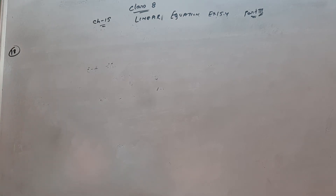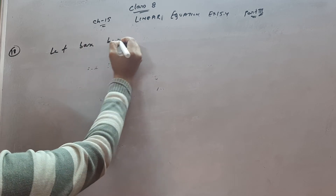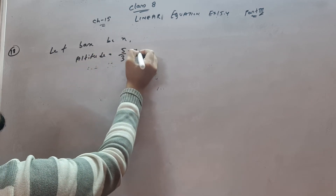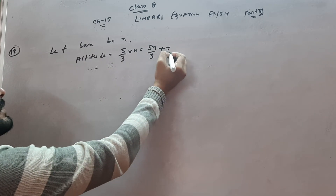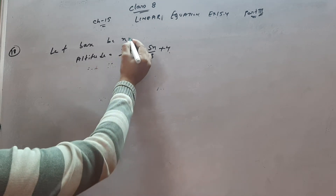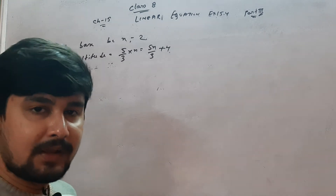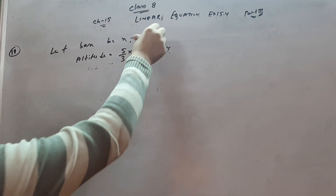Question number 18: if the altitude of a triangle is 5/3 times the length of the corresponding base, let base be x, so altitude = 5x/3. If the altitude is increased by 4 and the base is decreased by 2, the area of the triangle remains the same. Find the real altitude and base. Let's understand the question first.